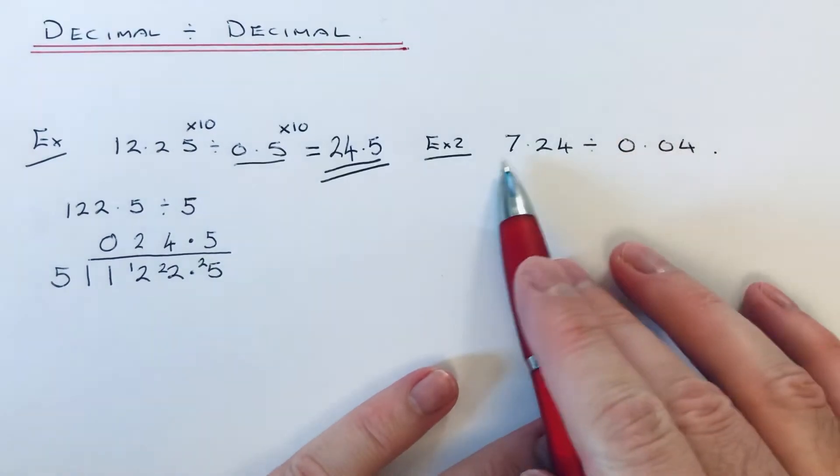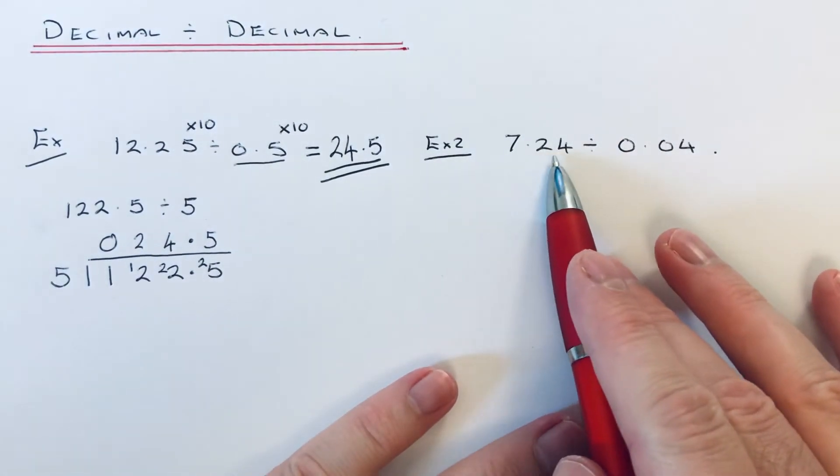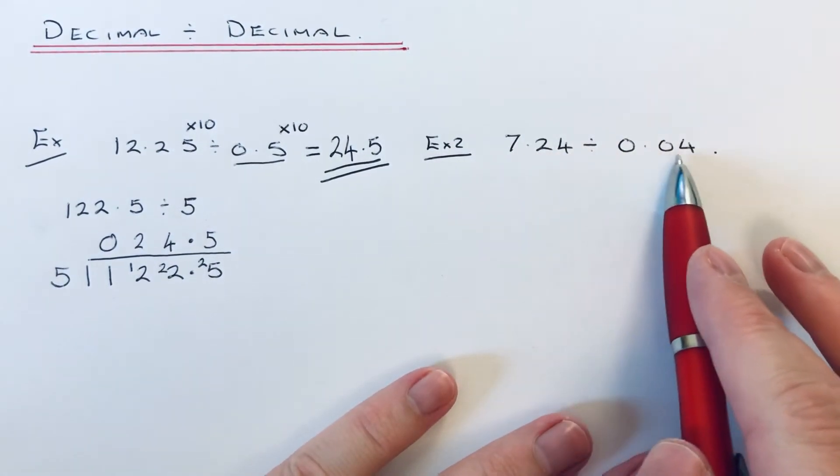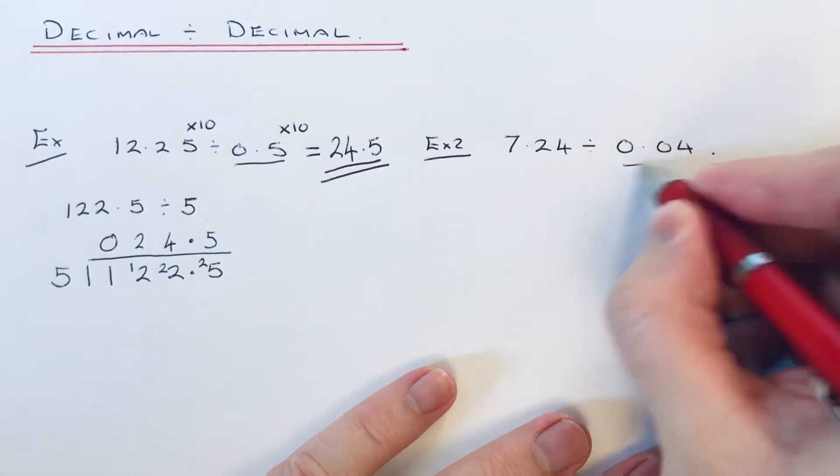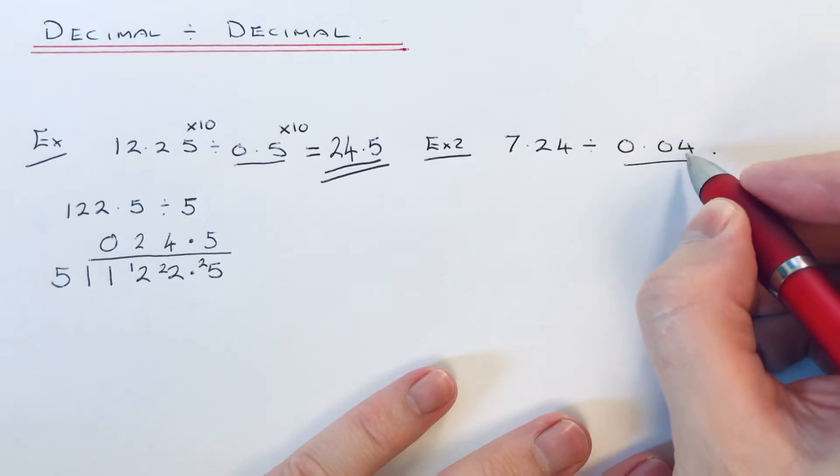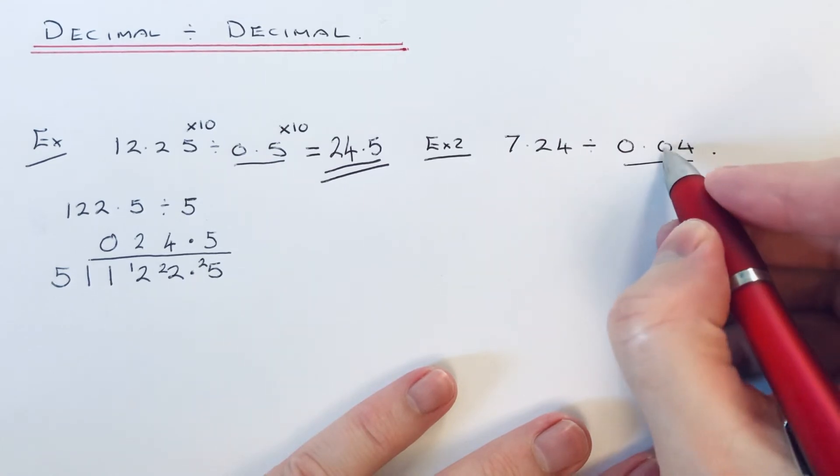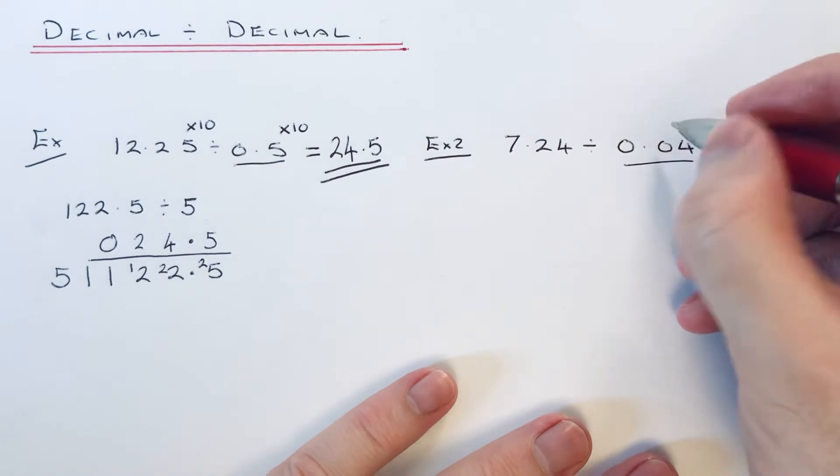Okay, so this time in example 2, we've got to divide 7.24 by 0.04. Now to get rid of the decimal here, we need to multiply this number by 100. When there are two numbers after the decimal point, we multiply by 100.